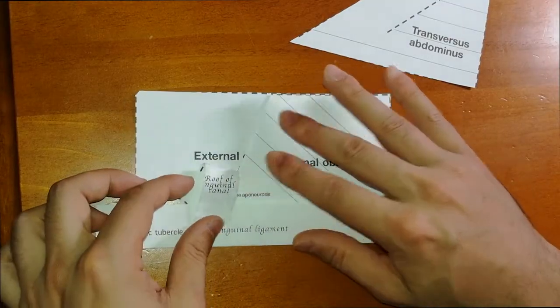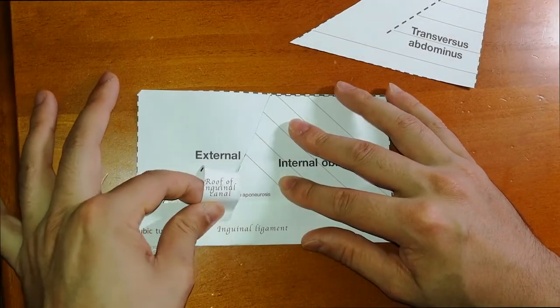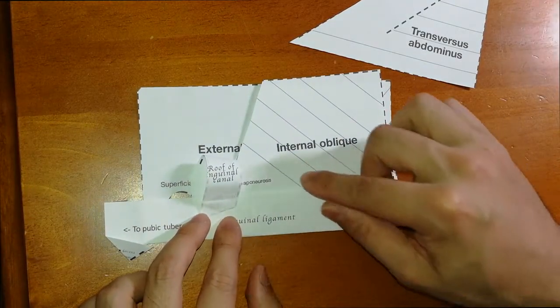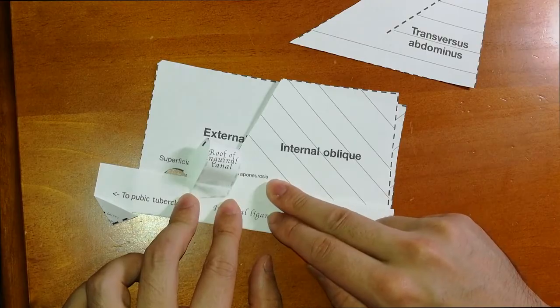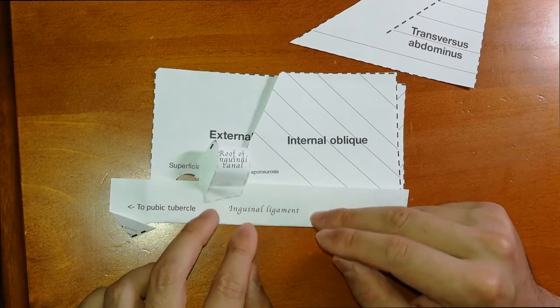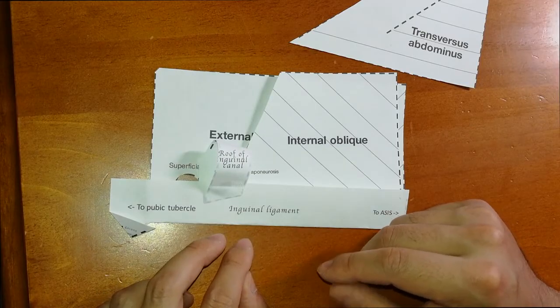As you can see, the reflected fibers here of the internal oblique form the roof of the inguinal canal. The most medial part of the internal oblique, the internal oblique aponeurosis, helps form the more lateral part of the anterior wall.